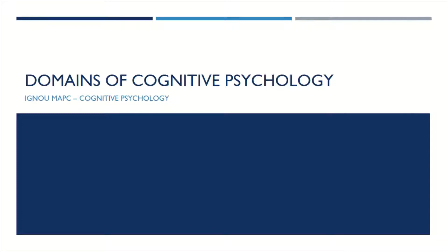Welcome to Prudent Psychology 101. Today we are going to learn about the domains of cognitive psychology. Cognitive psychologists often broaden and deepen their understanding of cognition through research in cognitive science, which is a cross-disciplinary field that uses ideas and methods from cognitive psychology, psychobiology, artificial intelligence, philosophy, linguistics, and anthropology.